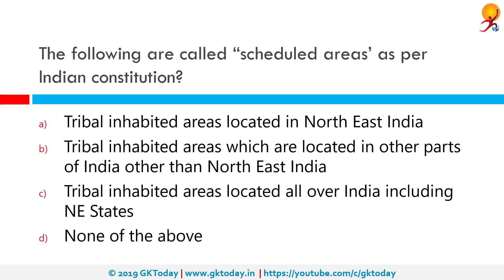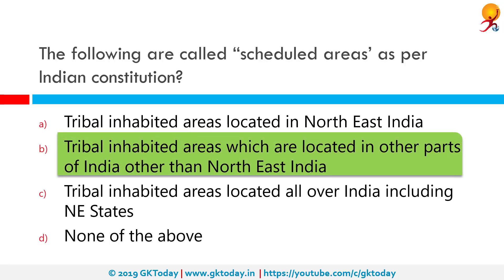The following are called Scheduled Areas as per the Indian constitution. Among the given options, tribal inhabited areas which are located in parts of India other than Northeast India are called Scheduled Areas. Tribal areas of Assam, Meghalaya, Tripura and Mizoram are separately dealt with under the provisions given under the Fifth Schedule.